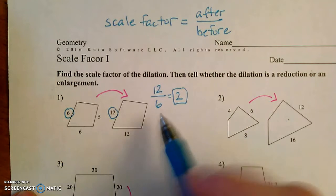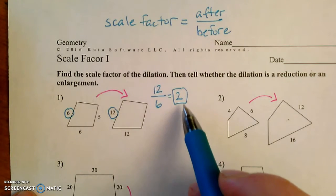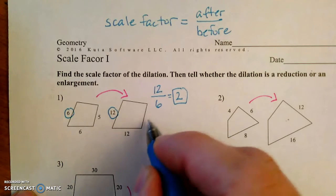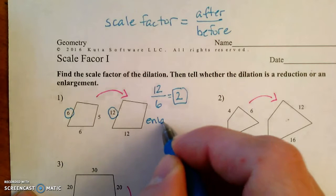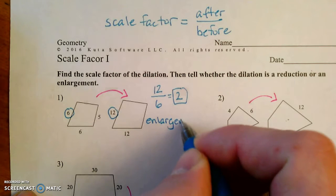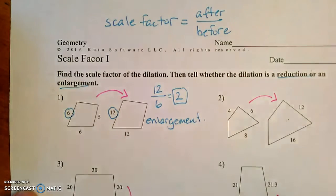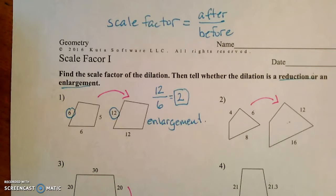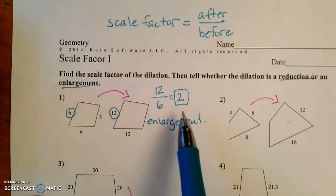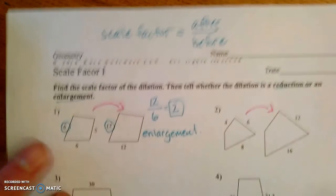So in this case, by the way, since our scale factor was greater than 1, then this is an enlargement. So you need to tell whether it's a reduction or an enlargement. Basically, are you making it bigger or are you making it smaller? If your scale factor is bigger than 1, you're making it bigger.